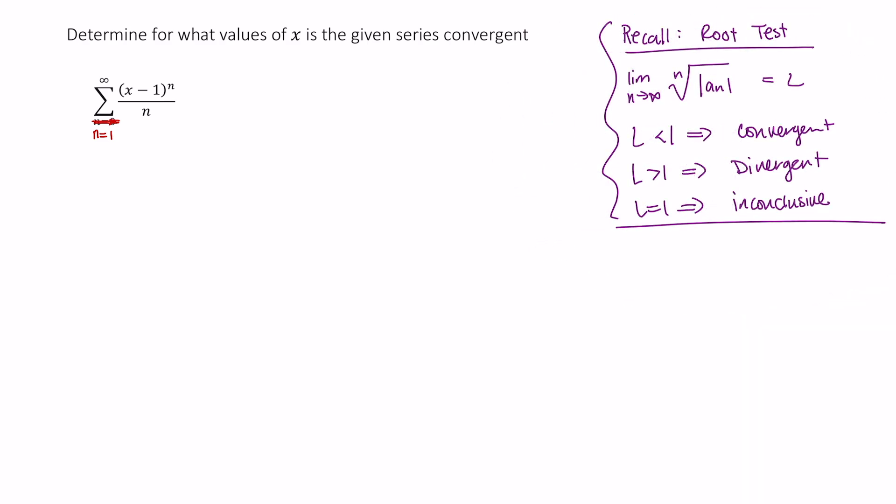All right, so there's our introduction to the root test in case you haven't seen it or you just forgot, which is also fine. So let's go ahead and set up our limit knowing that a sub n is equal to x minus 1 to the nth power divided by n. All right, so we're looking at the limit as n approaches infinity of the nth root of the absolute value of x minus 1 to the nth power divided by n.